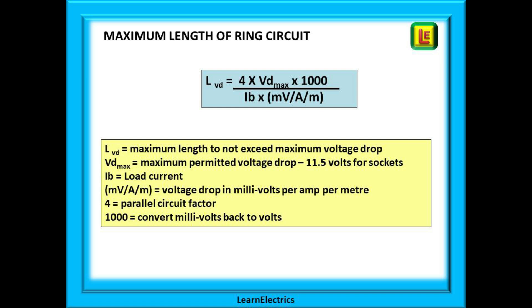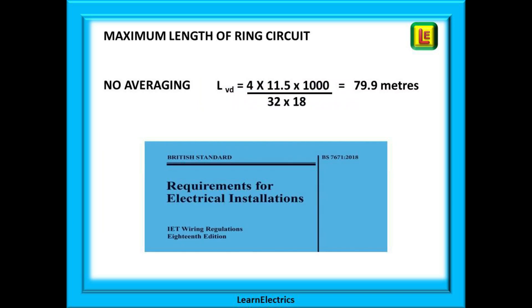If we calculate the maximum length of a circuit without averaging the load current, we will put the following numbers into our equation. You can see that we have used 32 amps, the full load, on the bottom row of the formula. Calculate this and we have a maximum circuit length of 79.9 meters. Above this circuit length our voltage drop will exceed the permitted limit of 11.5 volts.